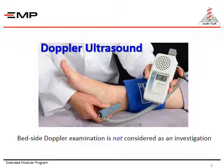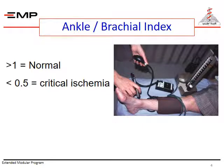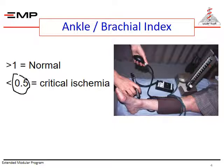The pocket Doppler can be used to measure the ankle pressure and calculate the ankle brachial index, as you will learn later. The ankle brachial index is normally above 1, because the pressure within the lower limb arteries is normally higher than the pressure in the upper limb arteries. An index of 0.5 is found in limbs with critical ischemia.